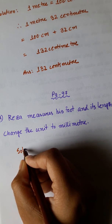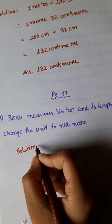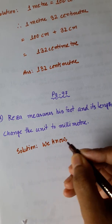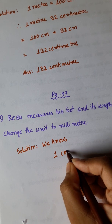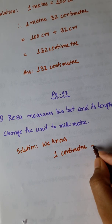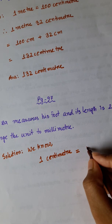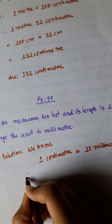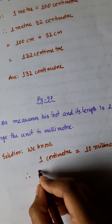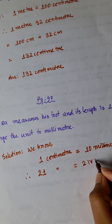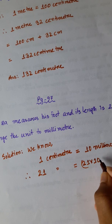We know 1 centimeter is equal to 10 millimeters. Therefore, 21 centimeters is equal to 21 into 10 millimeters.